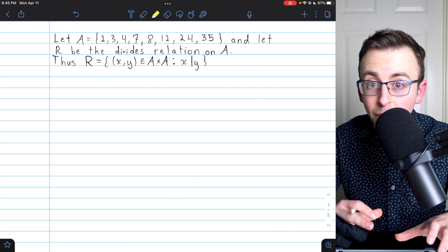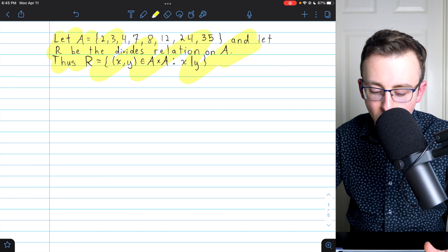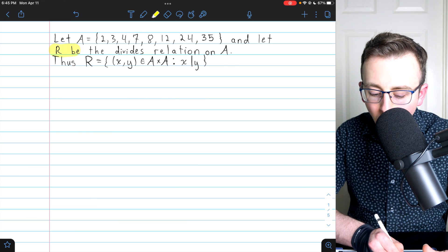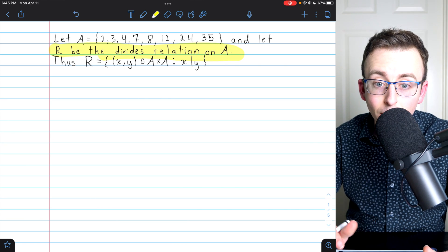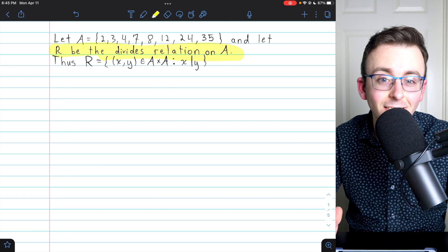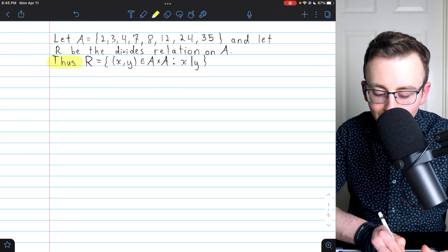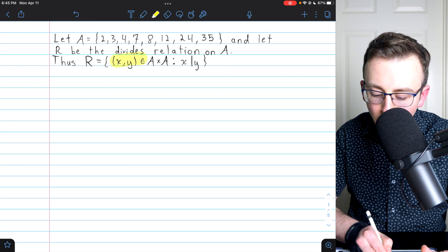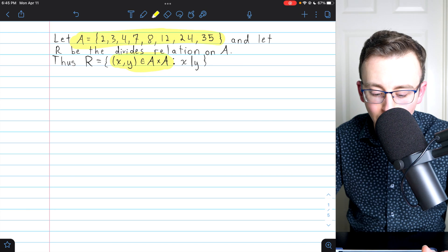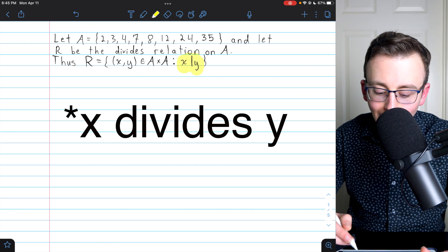Here's the classic example we're going to use. We've got a set of assorted positive integers here, and R is going to be the divides relation, which is a classic partial order. I'll leave it to you to verify that it is indeed a partial order. I want to focus more on Hasse diagrams. So since R is the divides relation, we could say that R is this: it's the set of ordered pairs (X,Y) that come from the Cartesian product of A with itself, just meaning X is in A and Y is in A, such that X relates to Y.